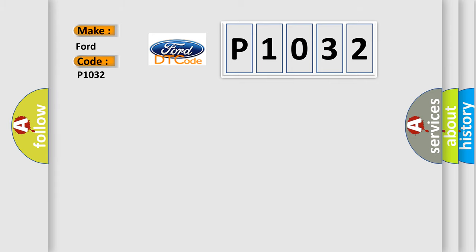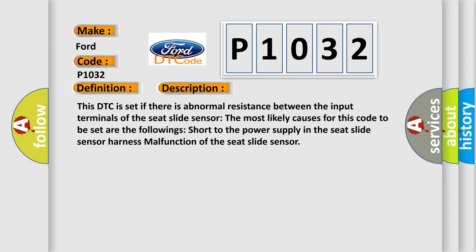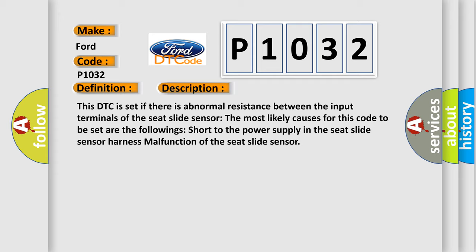The basic definition is seat slide sensor system fault power supply circuit short-circuited to power supply. And now this is a short description of this DTC code.